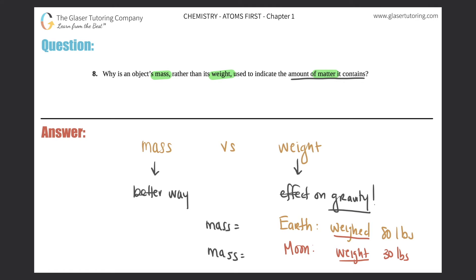However, if we took the mass on Earth and the mass on the moon, it would be the same exact amount. Let's just say here that it's 50 pounds. That's why we take an object's mass and not its weight, because a mass does not include the amount of force that gravity is pulling down on the object.